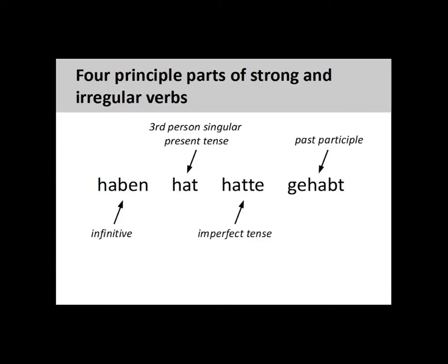In addition to regular verbs, German also has many irregular and strong verbs. These verbs have unusual variations in the conjugation of the present and imperfect tenses, as well as in the formation of the past participle. The imperfect tense is also known as the preterite, or simple past tense.